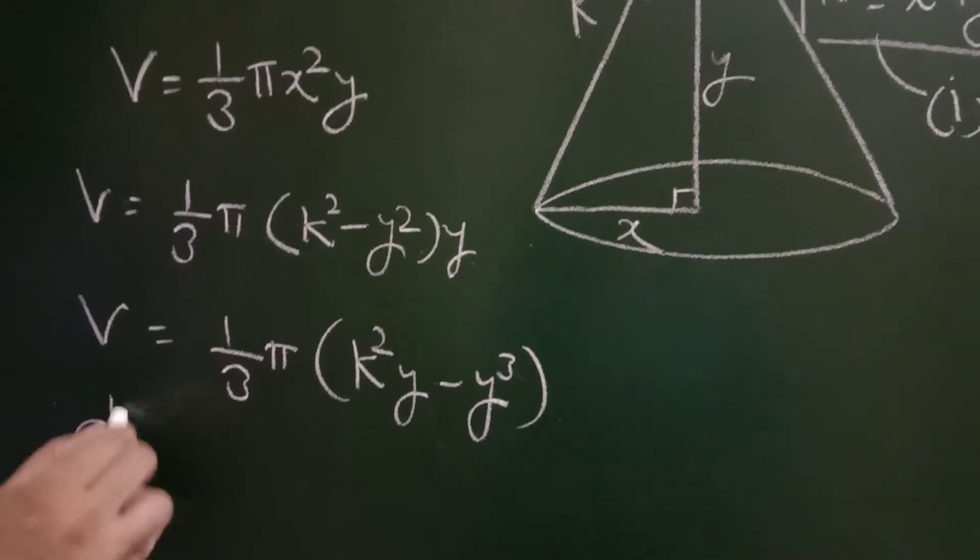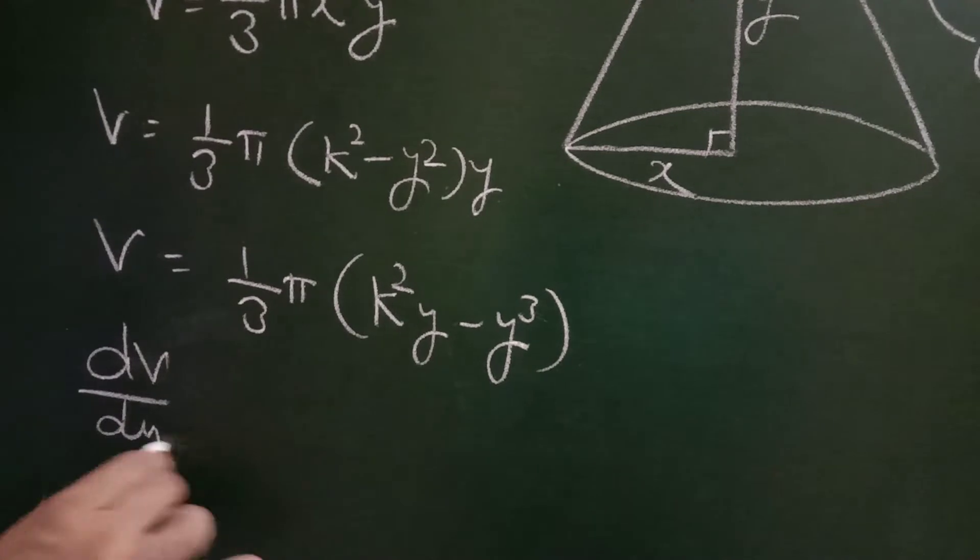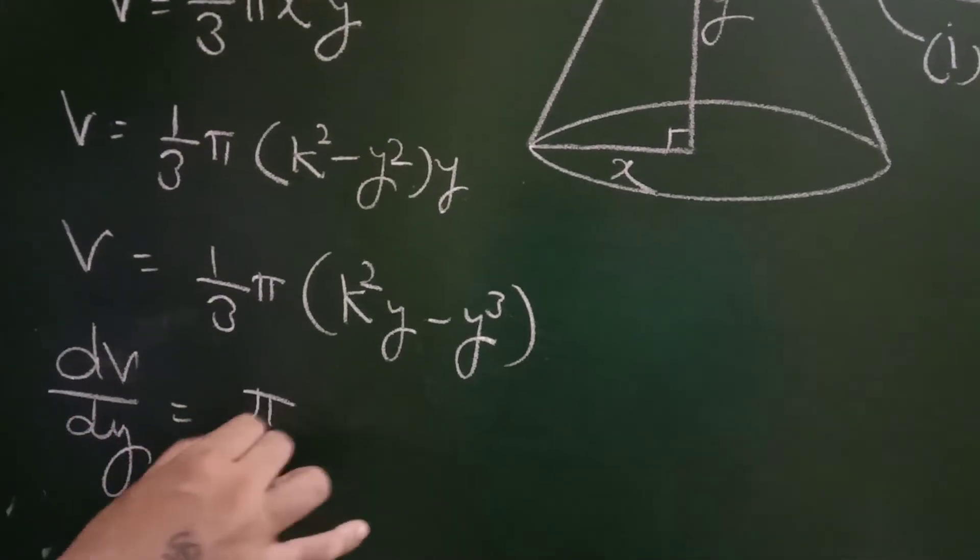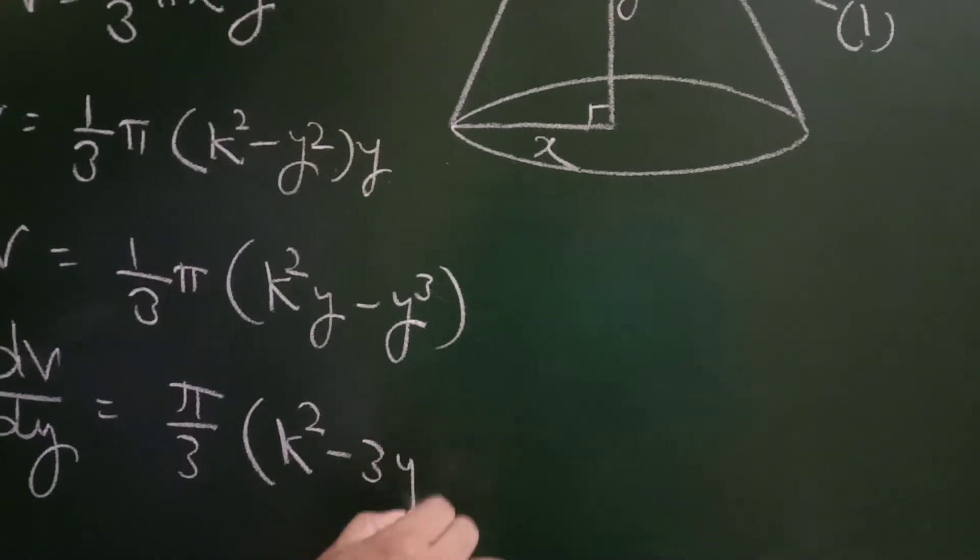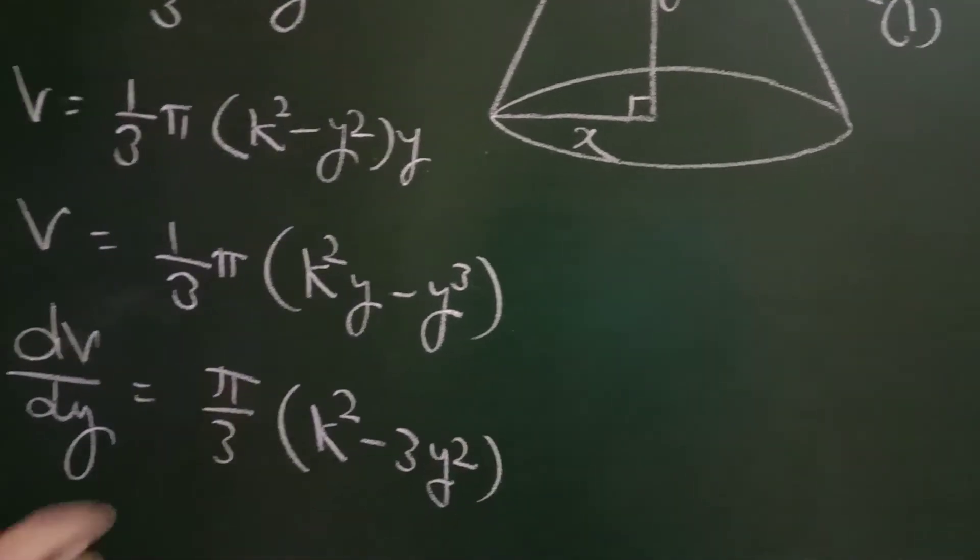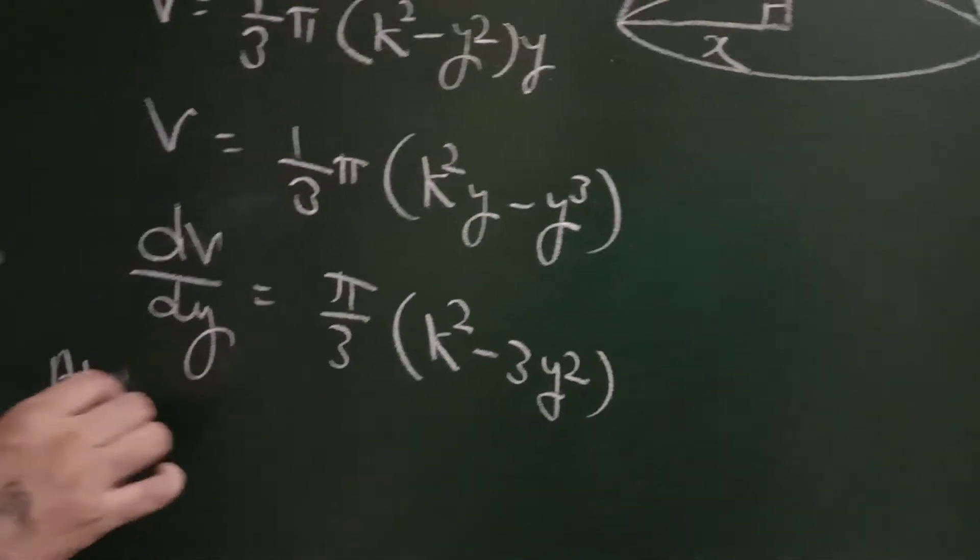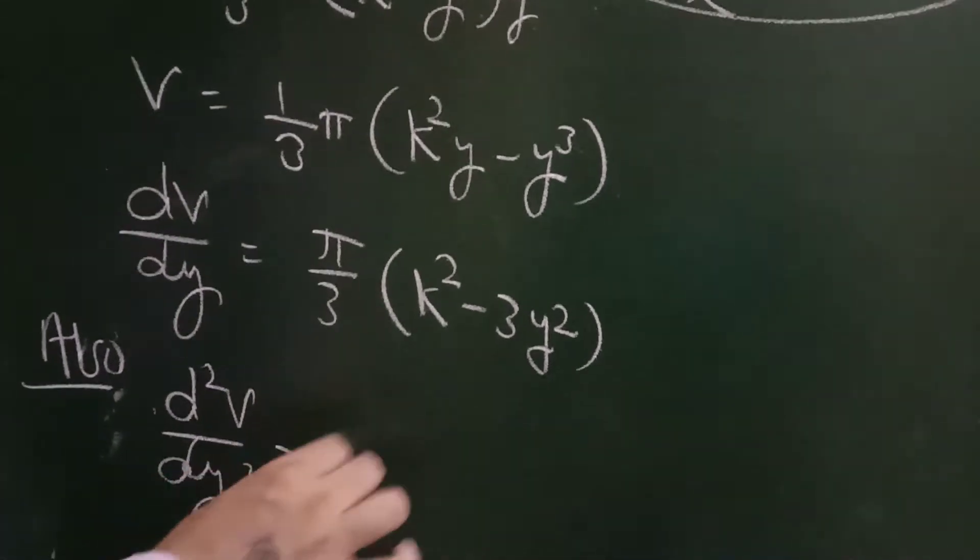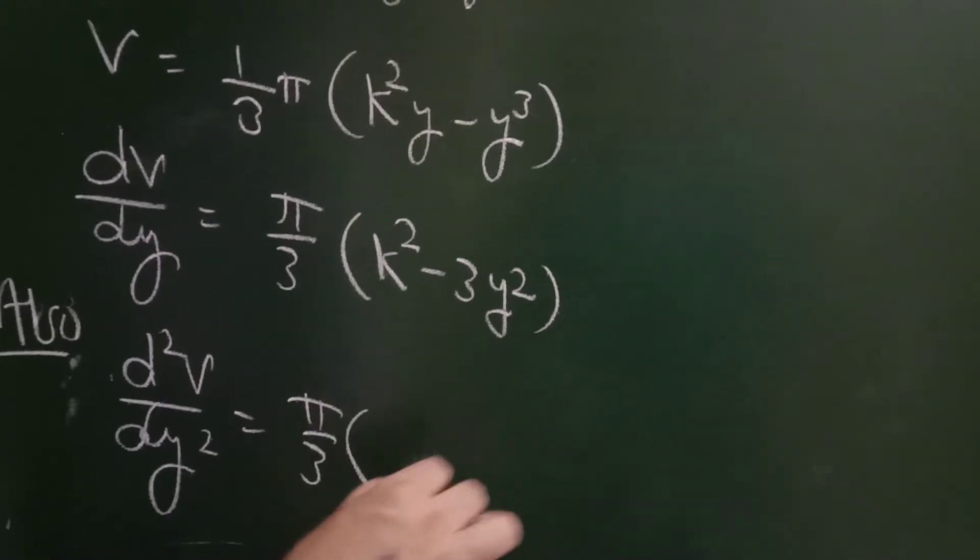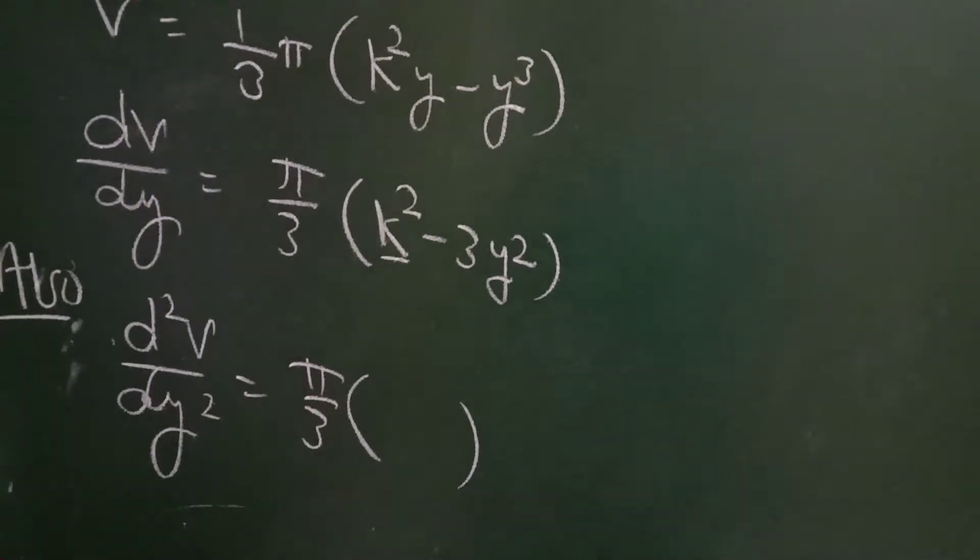dV/dy with respect to y: differentiate π/3, this will be k² - 3y². Also, if you calculate d²V/dy², which we have is π/3, the derivative of k² is zero...